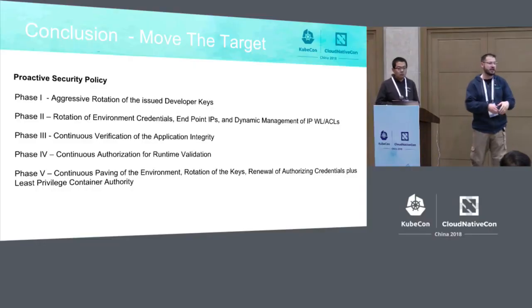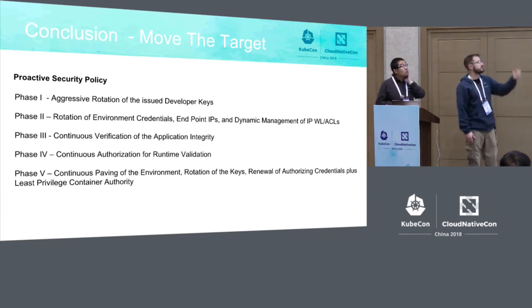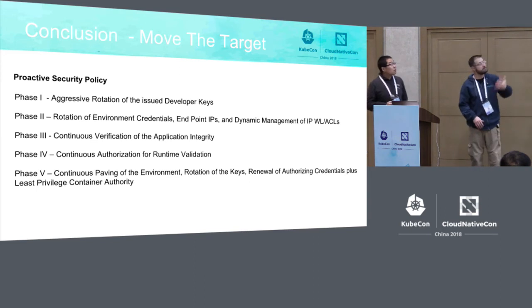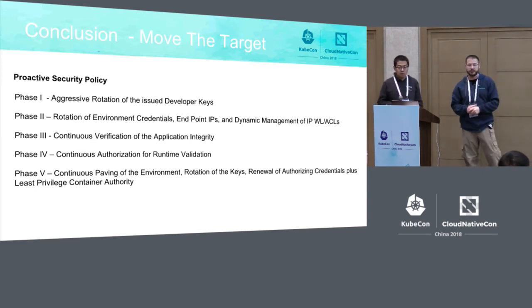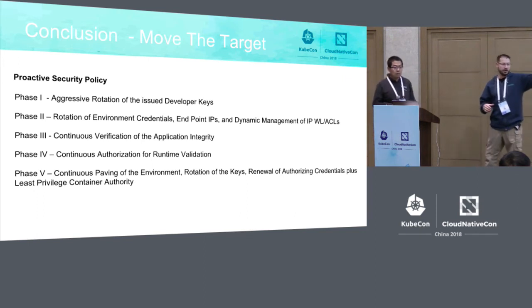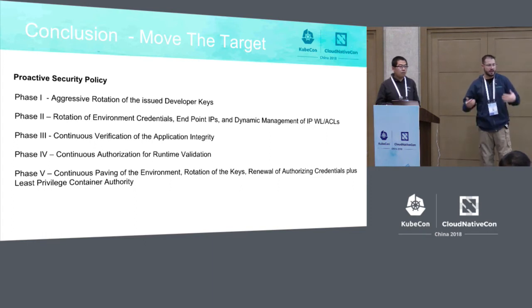To bring this all together: phase one is aggressive rotation of developer credentials and keys. Phase two is rotation of environment credentials, endpoint IPs, and dynamic management — TLS in transit, IP whitelisting point-to-point, and rotating certs to keep them current. Phase three is continuous verification of application integrity — if someone attacked you mid-process post-build but pre-deployment, you'd immediately see hash inconsistencies and know the application was tampered with. Phase four is ensuring only authorized workloads run, restricting movement if something breaks out. Phase five brings it all together with least privilege on the container and renewal of authorizing credentials.